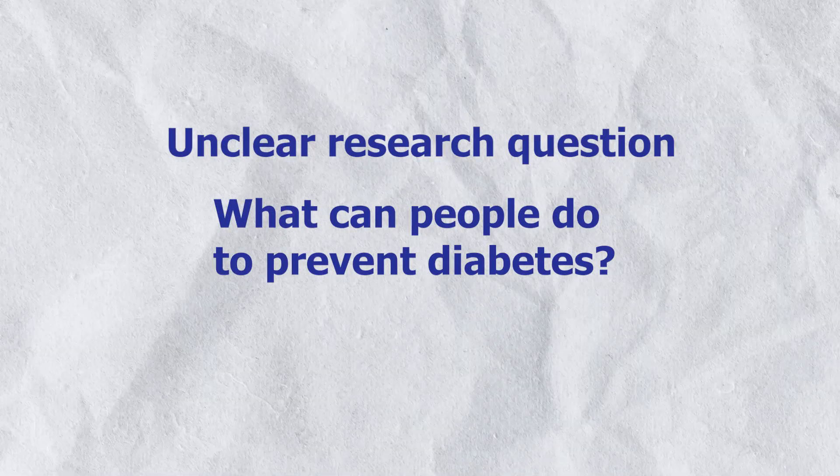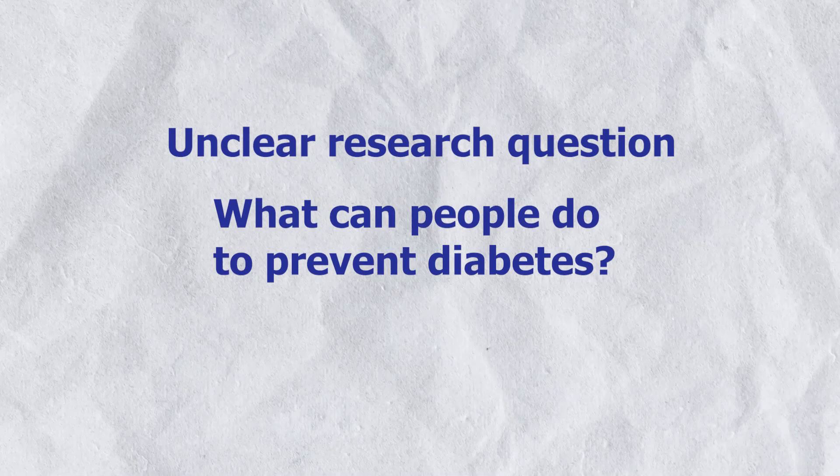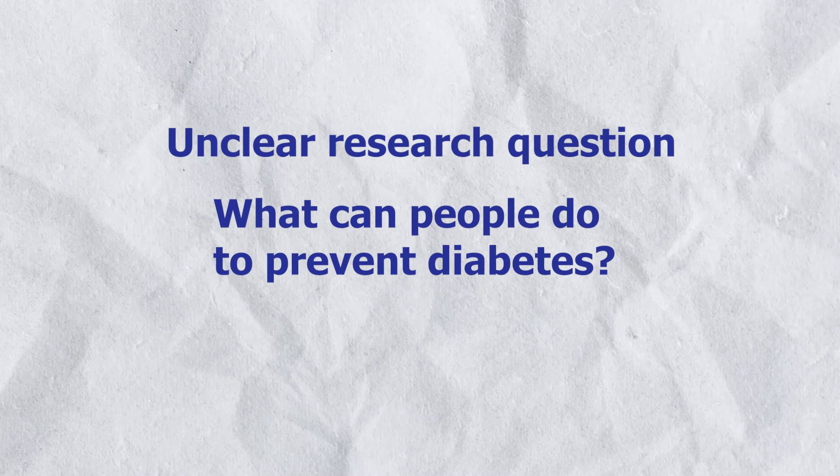Here is an example of an unclear research question: 'What can people do to prevent diabetes?' If you tried to find scholarly sources for such a general research question, you would retrieve thousands, if not millions, of scholarly articles that would not relate to the research question.